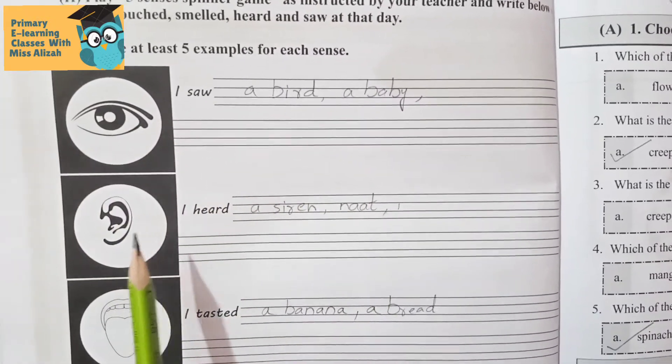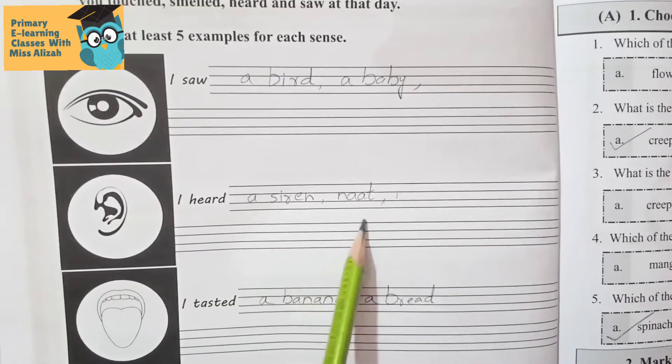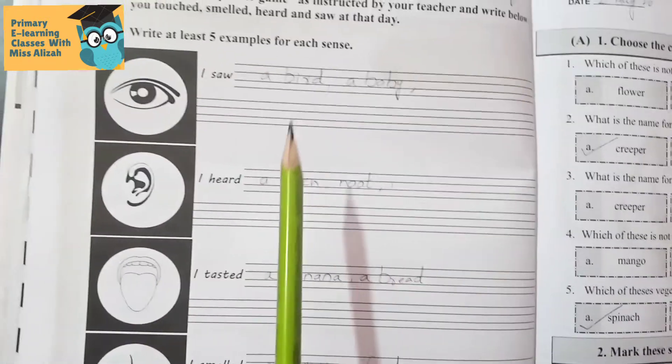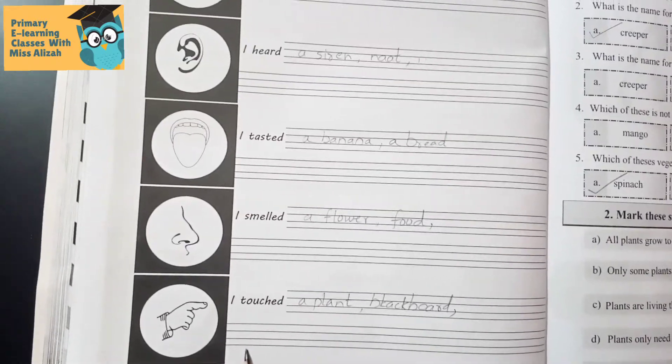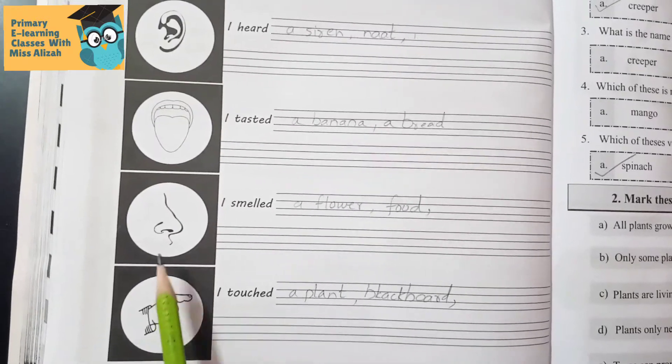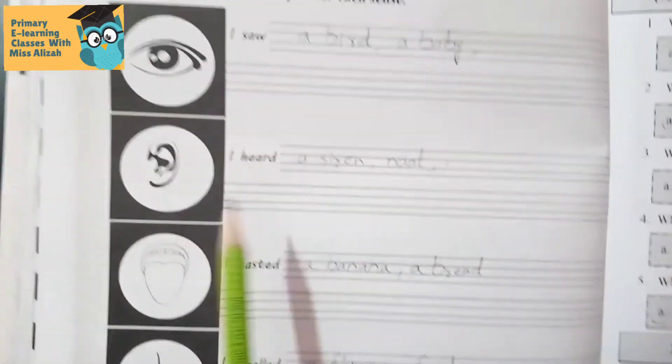And this way you have to complete five. In short, you have to write five examples for each sense: I touched, I smelled, I tasted, I heard, and I saw. Alright?